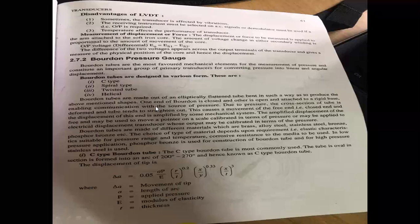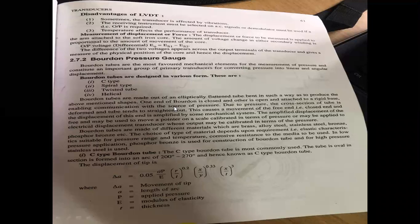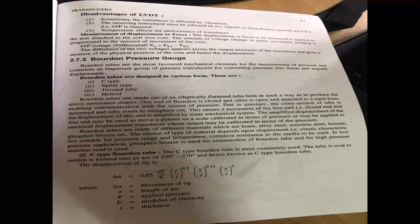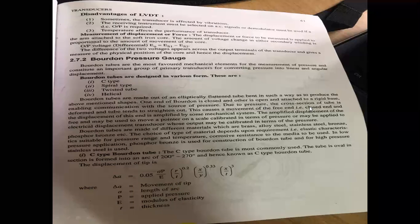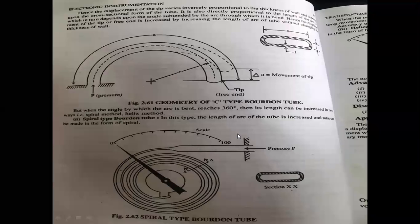The open end is attached to the base so that we can communicate with the pressure source. When pressure is applied, the cross-sectional area of the tube will change. Let me show you the diagram to explain this.